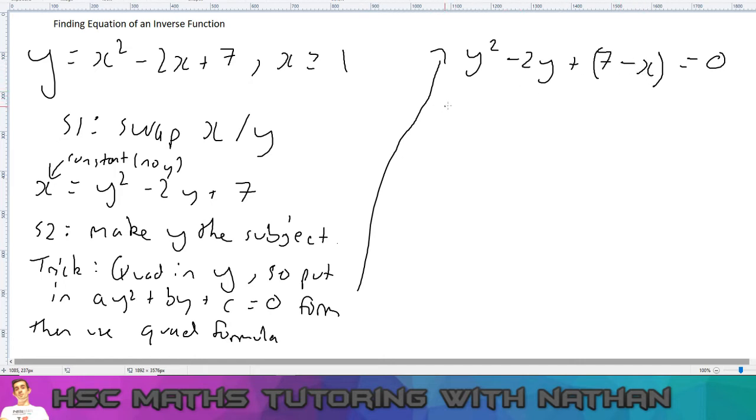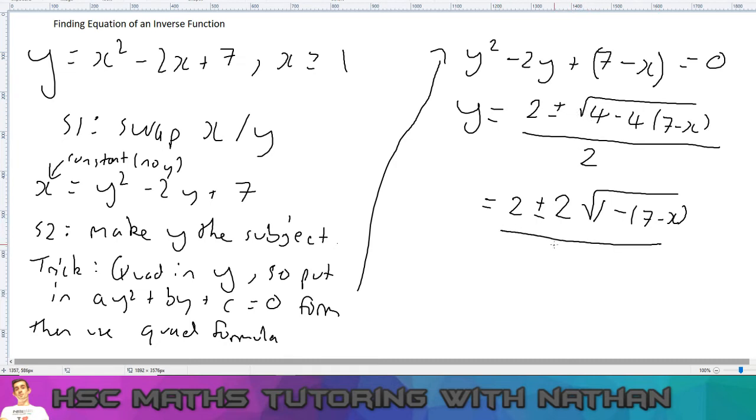So we must use the quadratic formula. So minus b becomes 2 plus or minus square root, 2 squared which is 4, minus 4 times a times c. A is just 1, so it's just going to be times c, over 2a. Now what I'm going to do here to simplify this further is factorize this 4 outside the square root, so that becomes 2 outside the square root, and that becomes 1 minus brackets 7 minus x. So my new step here is factorize the 4 outside the square root which becomes 2 when you take it outside the square root, as square root 4 equals 2. And now by doing that, all these 2's cross out and there's only 1s here.